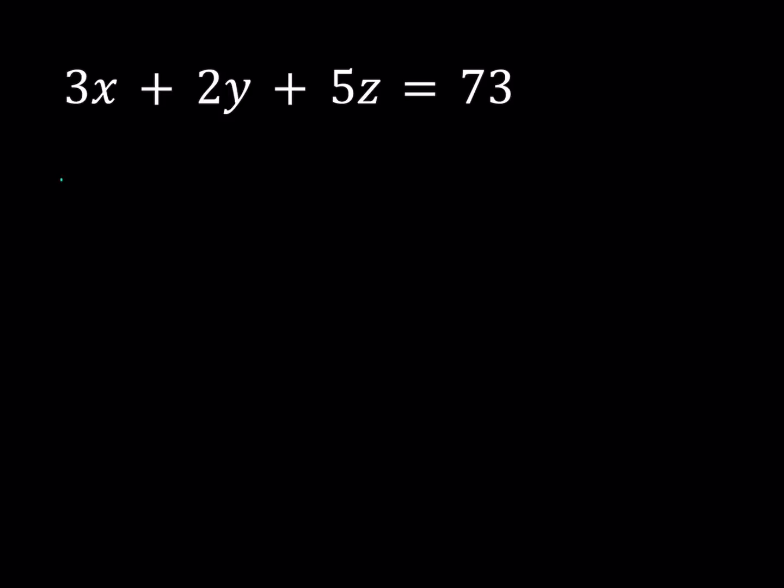Let's see what this gives us. First, I'm going to use mod 2. Mod 2 means everything will be reduced. For example, 3x, 3 mod 2 is going to be 1, so it's just going to be x. And y is going to disappear because 2 is 0 mod 2. And 5 becomes 1 because when I divide 5 by 2, the remainder is 1. So 5z is just going to be z. And 73, when you reduce it mod 2, it's just going to be 1 because it's an odd number.